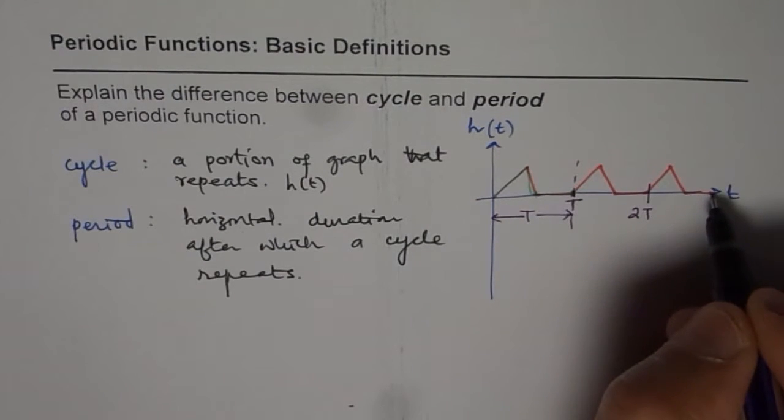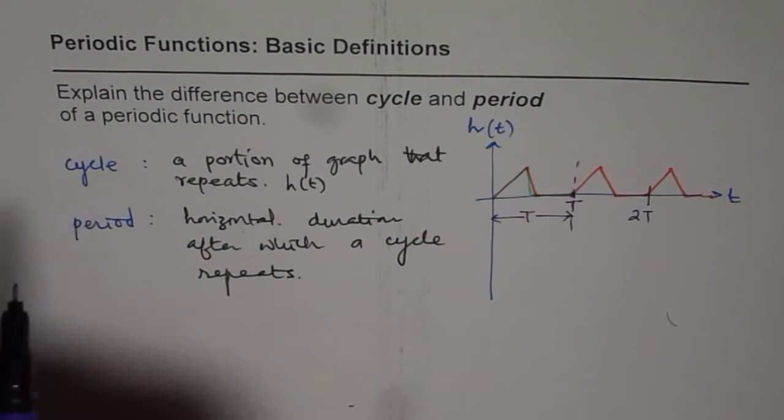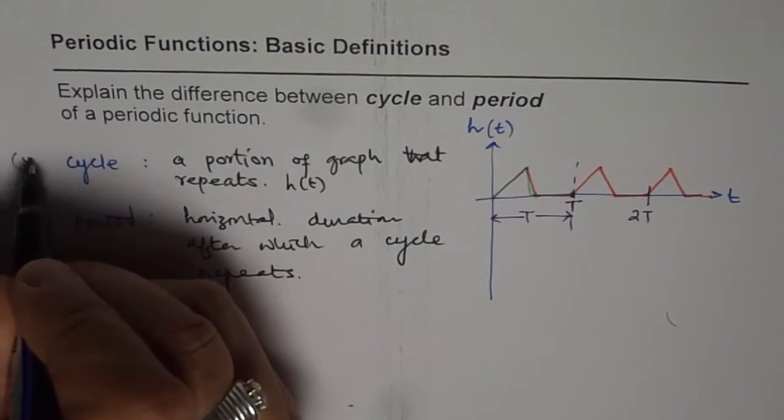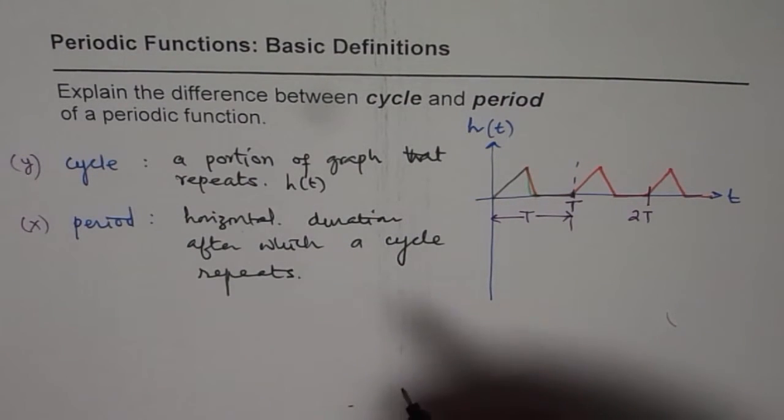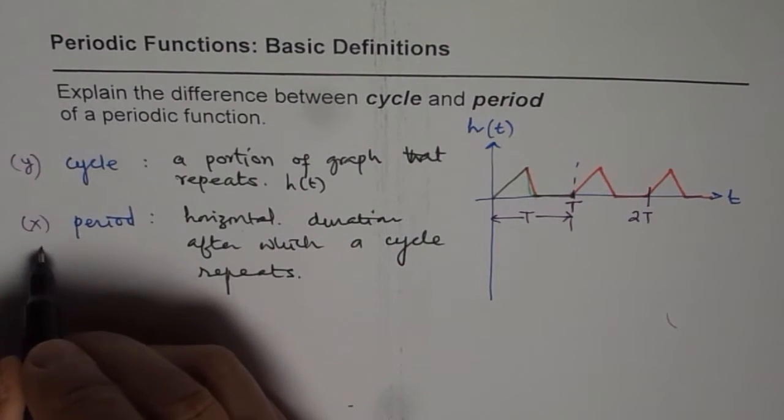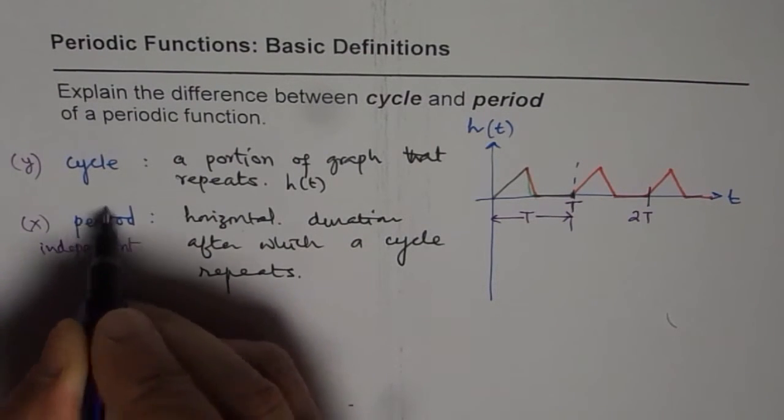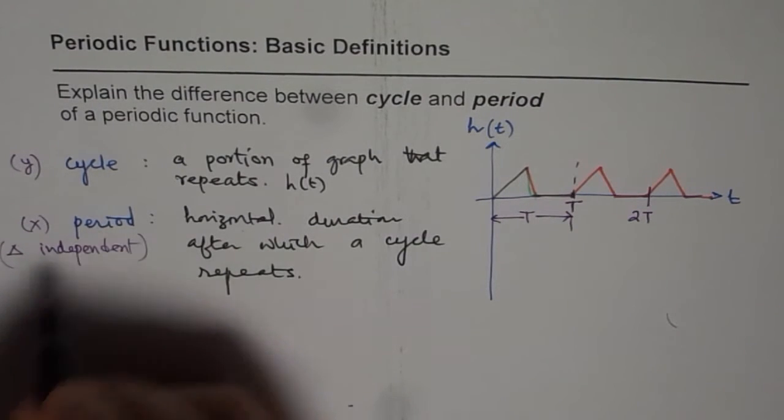So whenever we're talking about a cycle, we are more interested in the value of the function—the y-value. And when we're talking about the period, it is the x-value. In general, it is the independent variable. Change in independent variable is referred to as the period.